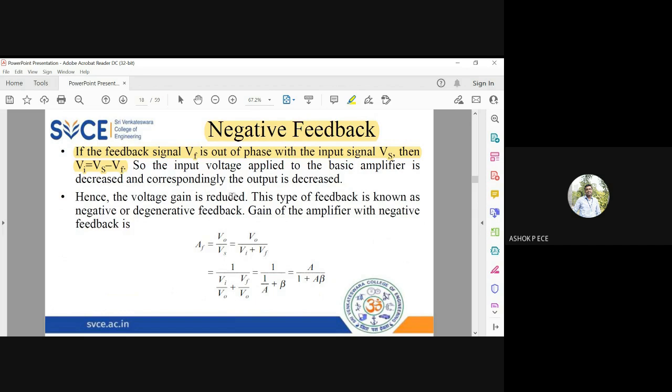VF is very very small when compared to V naught. So when you compare VS and VF, VF is very very small. That's why we take VS minus VF. The feedback voltage or feedback current coming out of the feedback network is very very smaller in magnitude when compared to the input voltage VS.